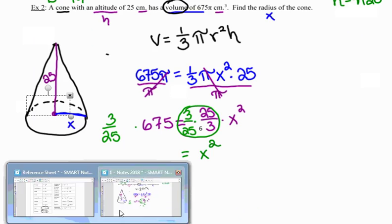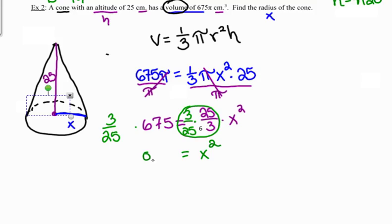So 81. This is looking much better already. So now x squared is equal to 81. To undo squaring x, I'm going to square root it. So x now is equal to 9. x represented the radius of my cone, making the radius of my cone 9 centimeters.